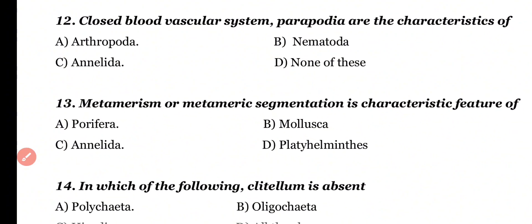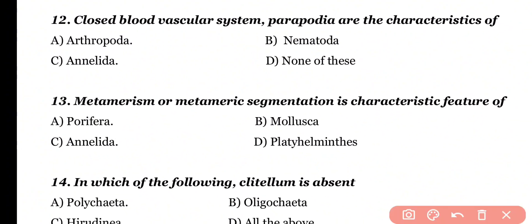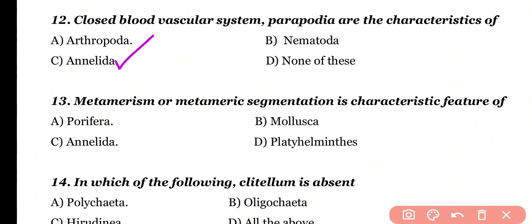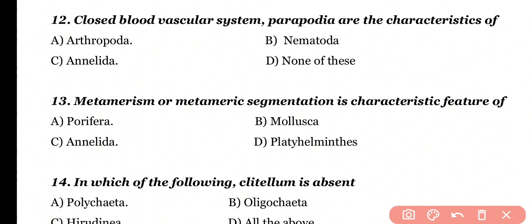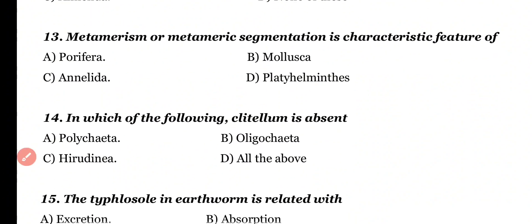Question number 12. Closed blood vascular system and parapodia are characteristics of: Arthropoda, Nematoda, Annelida, or none of these. Correct answer is option C. Closed blood circulatory system and lateral appendages called parapodia are present in Annelids.